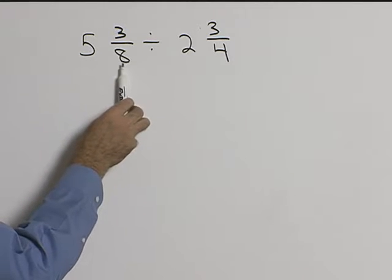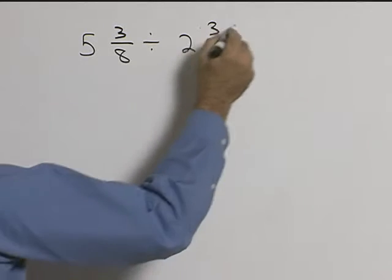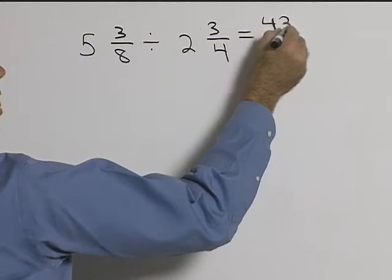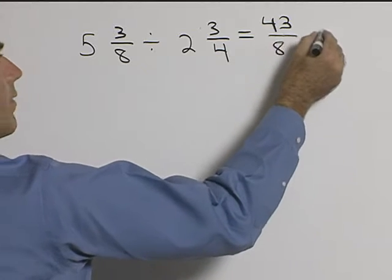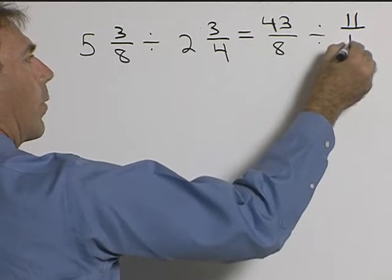So the first thing we need to do is get rid of the mixed numbers. We could say eight times five is forty, plus three will be forty-three over eight, divided by two times four is eight, plus three is eleven-fourths.